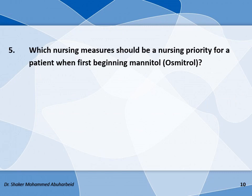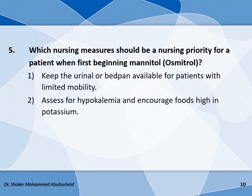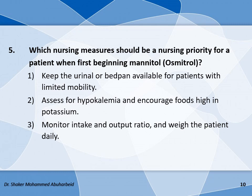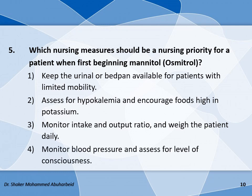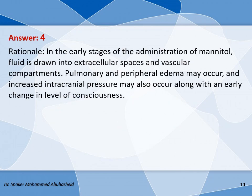Fifth question: which nursing measure should be the nursing priority for the patient when first beginning mannitol? Option one: keep the urinal or bedpan available for patients with limited mobility; option two: assist and monitor for hypokalemia and encourage foods high in potassium; option three: monitor intake and output ratio and weigh the patient daily; option four: monitor blood pressure and assess level of consciousness. The best answer is option four.